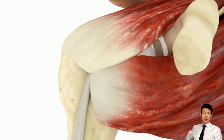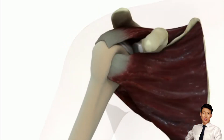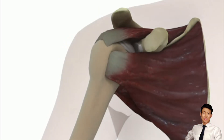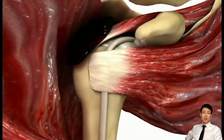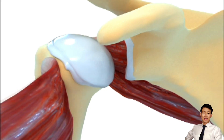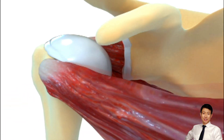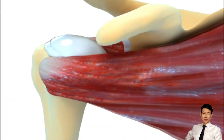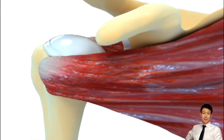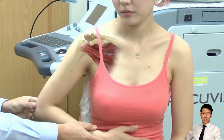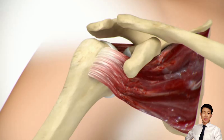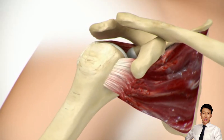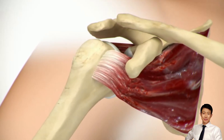Structural Overview. The subscapularis, the largest and most powerful rotator cuff muscle, arises from the anterior scapula and inserts on the lesser tuberosity. It functions as an internal rotator and stabilizer, especially in the position of abduction and external rotation.